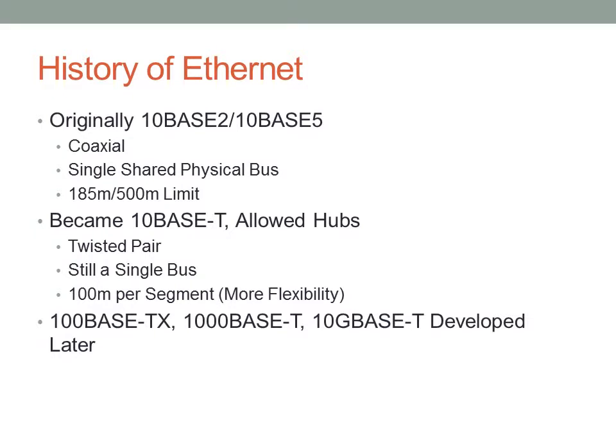Later on, we saw the advent of 100BaseTX, known as Fast Ethernet, and 1000BaseT, known as Gigabit Ethernet. We've also seen 10GBaseT — 10GbE — which is still a developing technology. And there are also some higher-level technologies now, even for 100Gb Ethernet.